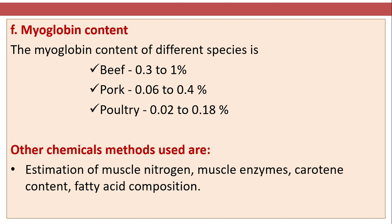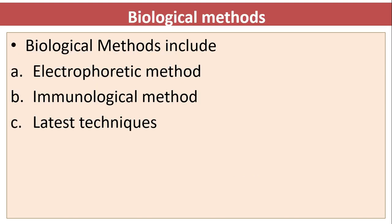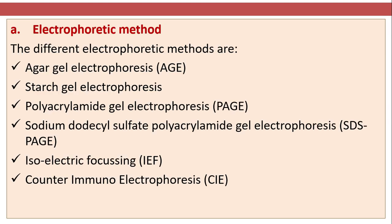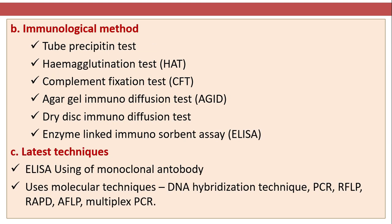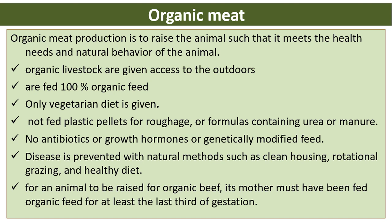Other chemical methods include estimation of muscle nitrogen, muscle enzymes, carotene content, and fatty acid composition. Biological methods include electrophoretic methods such as agarose gel electrophoresis, PAGE, SDS-PAGE, IEF, and CIE, as well as immunological methods including CFT, AGID, and ELISA. Latest techniques include ELISA, PCR, RFLP, RAPD, AFLP, and multiplex PCR.